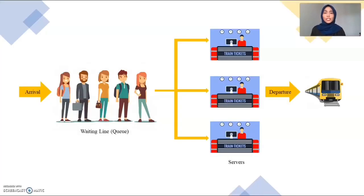The model designed in this research is a multiple channel single phase structure as shown in the figure. As you can see, the customer will arrive in the waiting line to buy the tickets. After the process of buying the tickets is done, they will depart to the designated train platform to their destination.